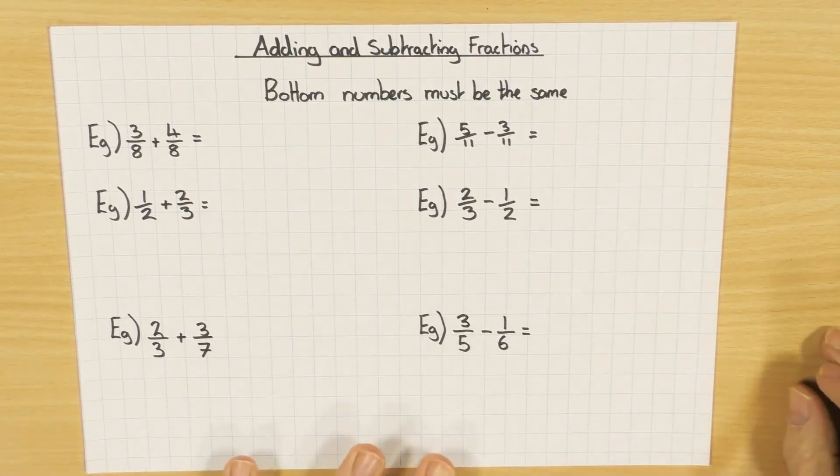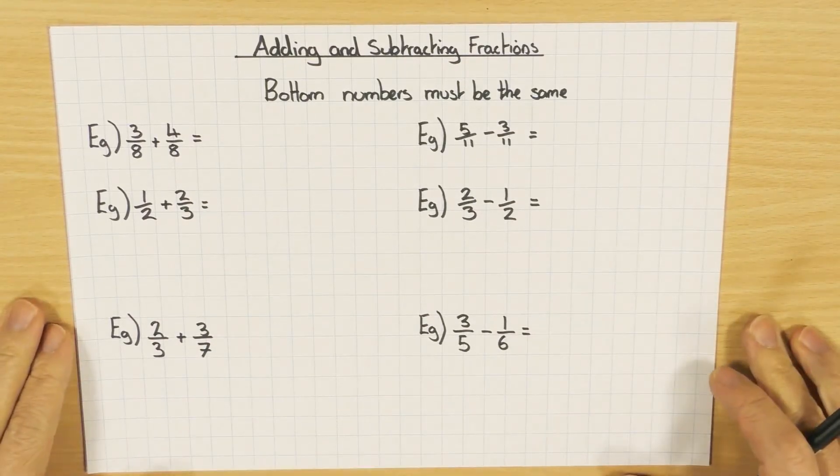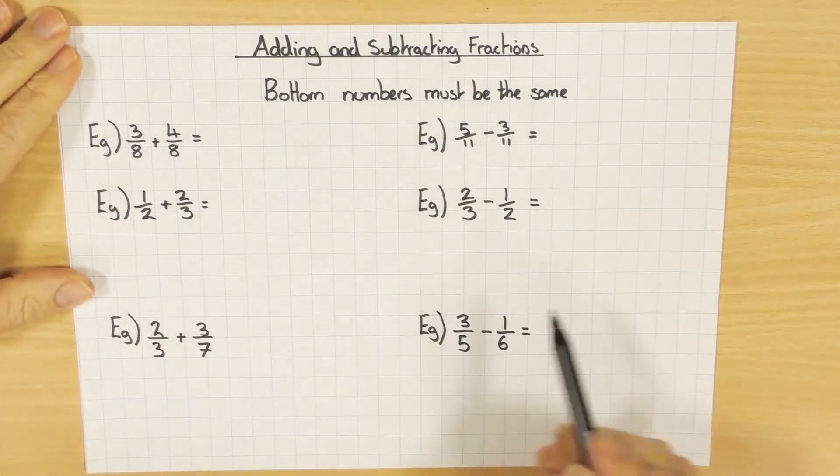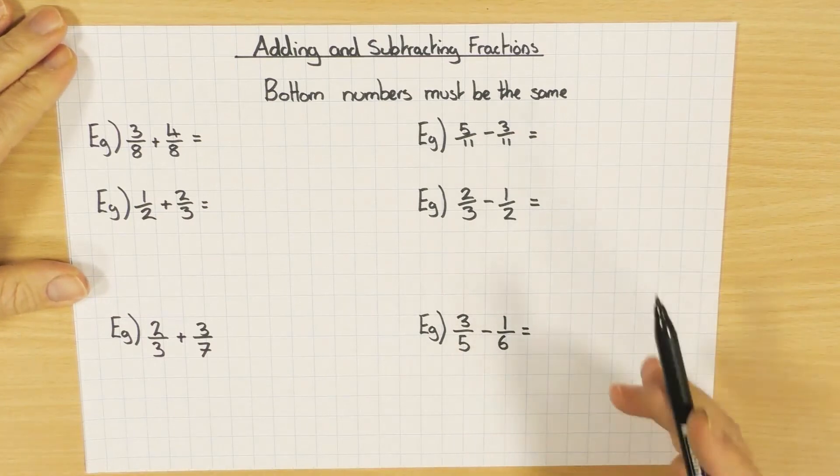Right, adding and subtracting fractions. We've got to remember if we're doing that, we've got to make the denominators, the bottom numbers, must be the same. So if they are the same, it's really easy. We just add the tops or take away the tops.